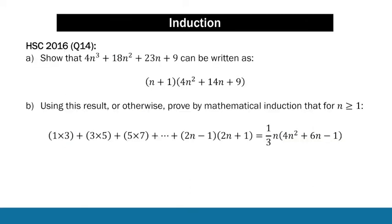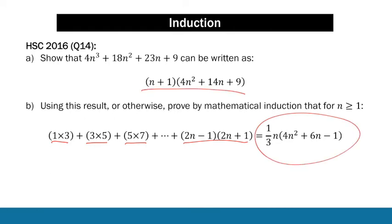Let's start with a question from last year's HSC. This question has a lead-in where we're asked to prove a result that we'll then use in the induction proof itself. The proof itself asks us to prove that the product of increasing odd integers is equal to a certain expression. The result from part A is going to play into the induction proof in some way, but we'll see that when we get to it.